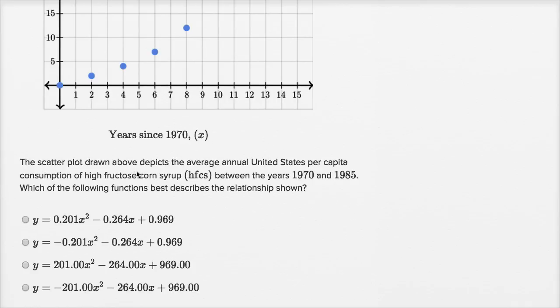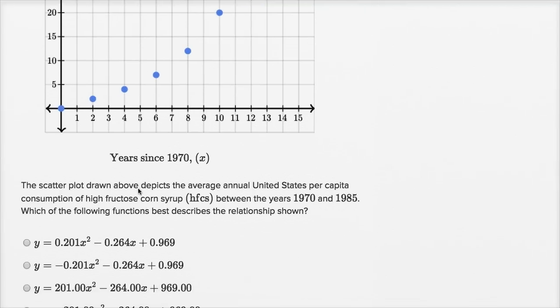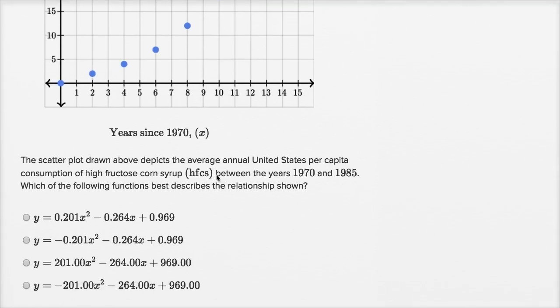The scatter plot drawn above, we'll take a look at it after we finish reading the question, depicts the average annual United States per capita consumption of high fructose corn syrup between the years 1970 and 1985. Which of the following functions best describes the relationship shown?